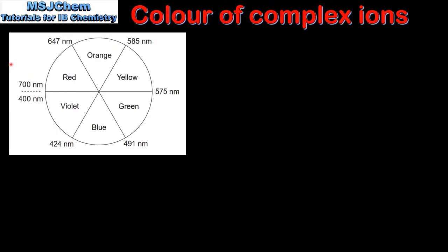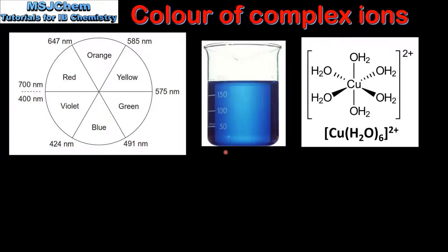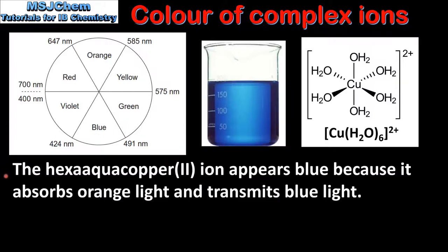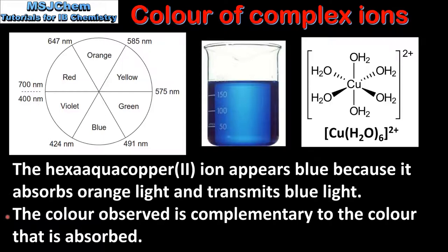Next we look at how to use the colour wheel to determine the colour of a complex ion. The colour wheel shows all the wavelengths of visible light, from longer wavelength red light to shorter wavelength violet light. The colours that are opposite each other on the colour wheel are known as complementary colours. For example, red and green are complementary colours, as are orange and blue, and yellow and violet. The hexa aqua copper 2 ion appears blue because it absorbs orange light and transmits blue light. The colour observed is complementary to the colour that is absorbed.